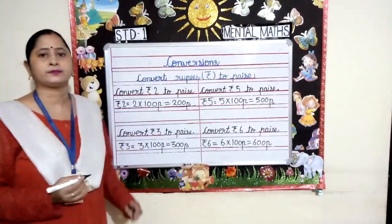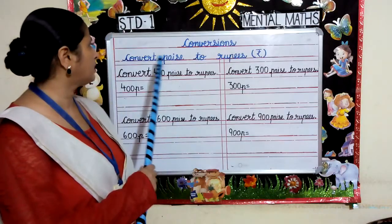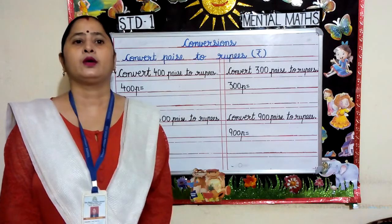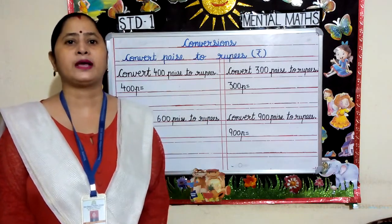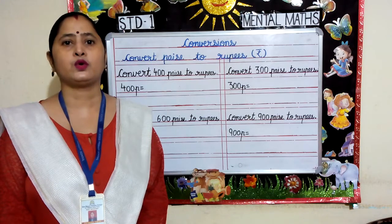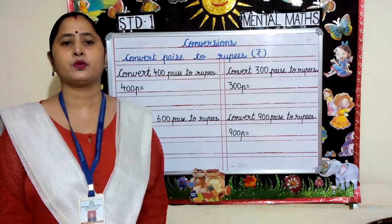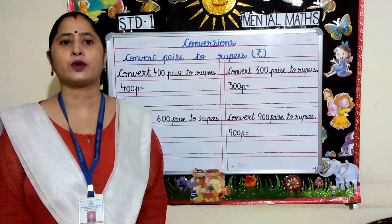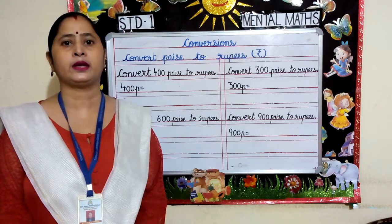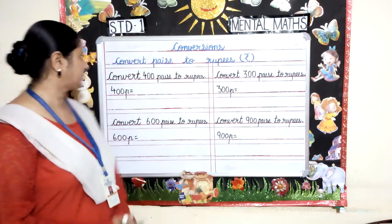Now let's learn how to convert paise into rupees. To convert paise into rupees, we first need to count 2 digits from the right and put a point, and also write rupees in the beginning. Let's see a few examples.